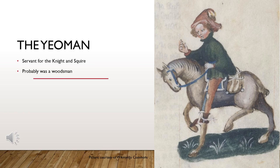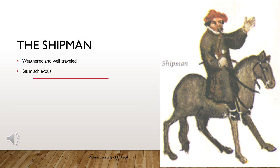Now we're down to the final class — the unskilled laborers. The Yeoman is a servant whose job is to make sure the knight and squire have everything they need. The Shipman is a sailor with weathered skin; being tan was a giveaway that you were from a lower class who had to work outside, since nobles rarely went outdoors and kept their skin pale.